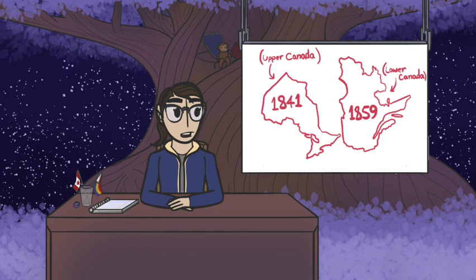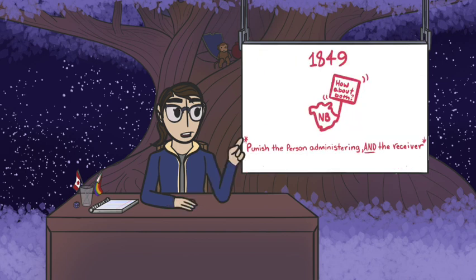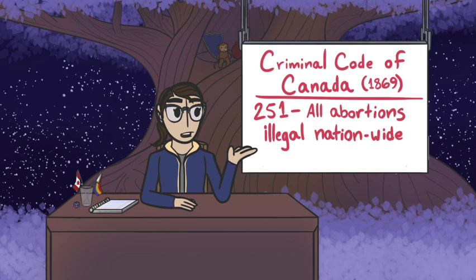This changed for New Brunswick in 1849, who, ever the frontrunner, made it a crime to administer an abortion and to receive one. And when Canada, as a fresh country, passed the first iteration of the Criminal Code in 1869, it included a very special section 251, which essentially copied New Brunswick, making all abortions illegal nationwide.